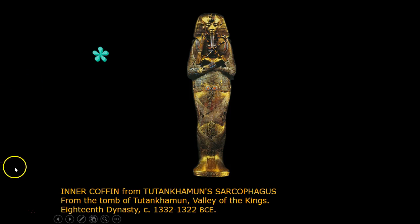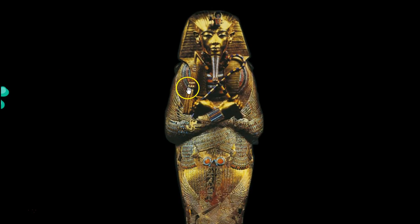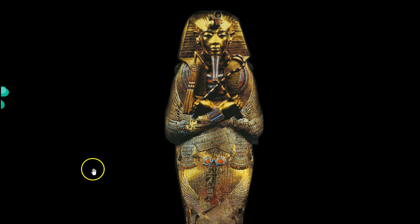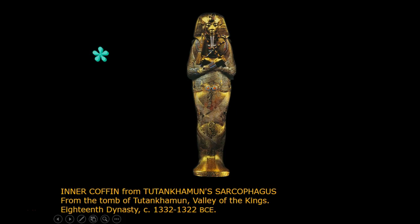Zooming in, you can see the crook and the flail. Beneath these goddesses are two more — Isis and Nephthys — etched in gold.